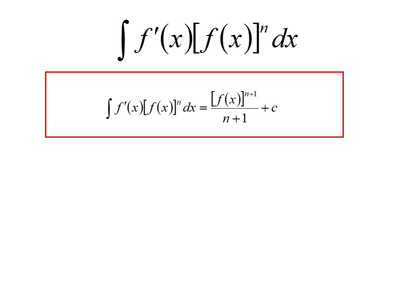So derivative times a function, and if you have that situation you can just add one to the power over the power, same as you can for just a polynomial. But whatever is being raised to the power of n, it has to be the derivative of that function for this to work. We sometimes try and manipulate it so we get it, but that's what we're going to do.